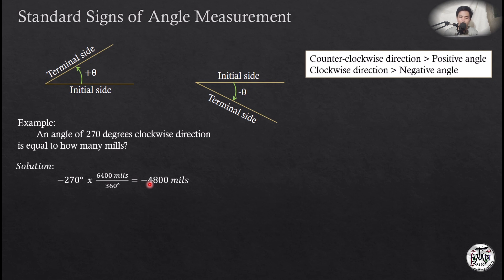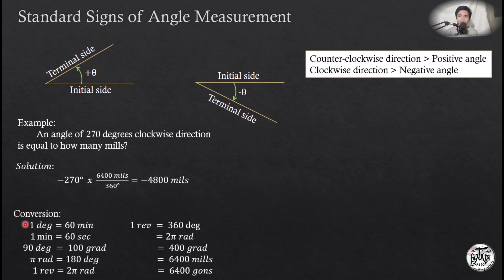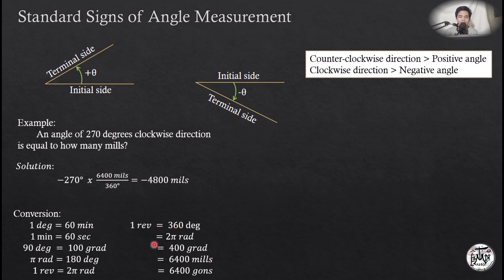Take note that we have the conversions of an angle — not only the units but also the angle conversions: 1 degree equals 60 minutes, 1 minute equals 60 seconds, 90 degrees equals 100 gradients, π radians equals 180 degrees, and 1 revolution equals 2π radians. Also, 1 revolution equals 360 degrees, or 2π radians, or 400 gradients, or 6,400 mils.